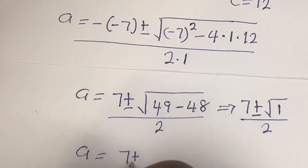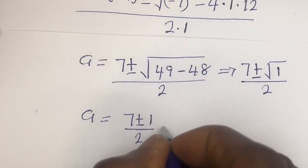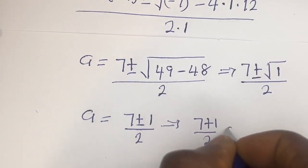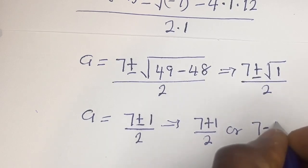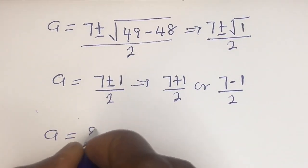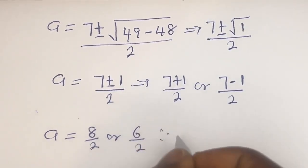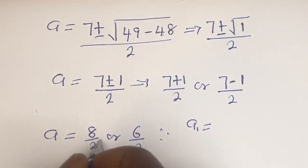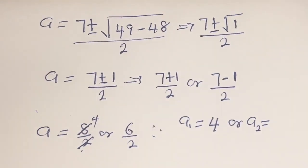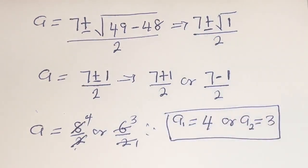So a equals 7 plus or minus square root of 1, divided by 2. That is 7 plus 1 divided by 2, or 7 minus 1 divided by 2. Therefore a equals 8 over 2 or 6 over 2, giving a1 equals 4 or a2 equals 3.